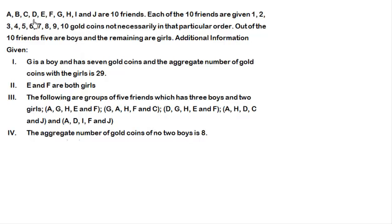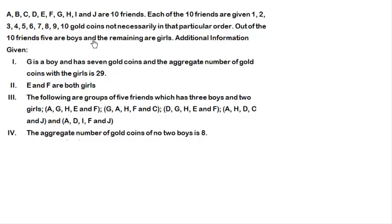In this set, A, B, C, D, E, F, G, H, I and J are 10 friends, and each of the 10 friends were given 1 to 10 gold coins, not necessarily in that particular order. Out of the 10 friends, 5 are boys and the remaining 5 are girls. Using additional information given, we have to identify who among these 10 are boys and who are girls, and what are the possible number of gold coins the groups of boys and girls are carrying.